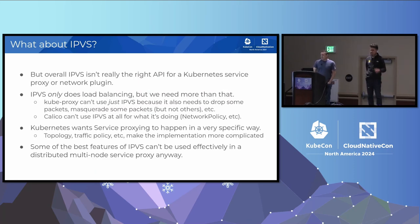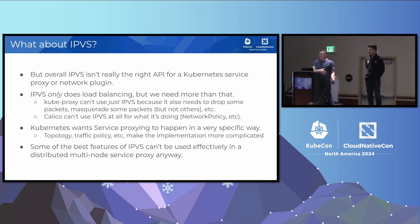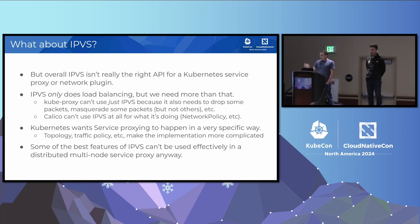But overall, IPVS is not really the right choice for KubeProxy. The big thing is that IPVS only does load balancing, and KubeProxy needs to do more — it needs to drop some packets and masquerade things. Calico can't use IPVS at all. The KubeProxy IPVS backend actually has a lot of iptables in it. So if we wanted to keep it working after RHEL drops support for iptables, we would have had to port all of that to nftables — and at that point, why not just port the rest to nftables as well?